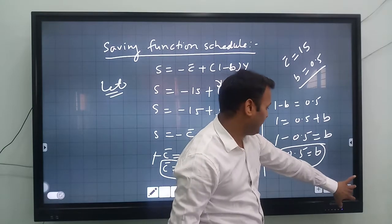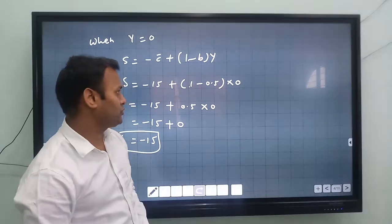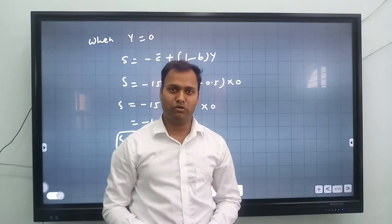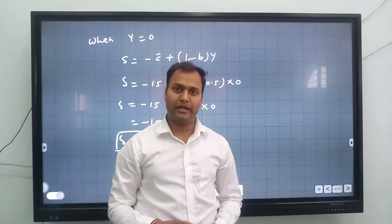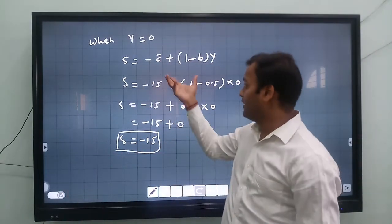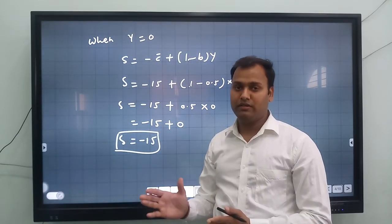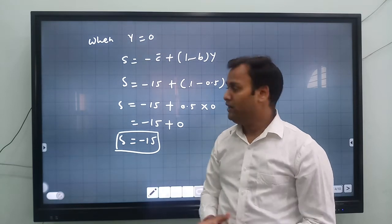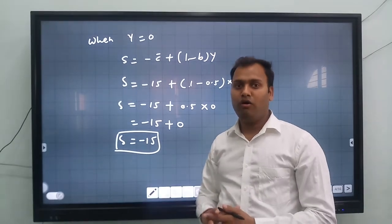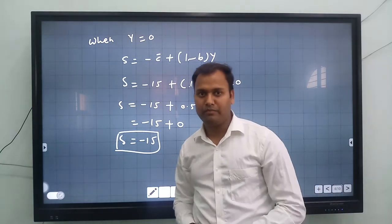This is the concept of how to calculate saving functions and how to plot the saving function curve. In your book there are many questions on how to calculate APC, MPC, how to derive the consumption function and saving function, and how to use these functions for calculating income, consumption, and savings. Solve all the questions related to your chapter. If you have any doubts, you can contact me. Thank you so much.